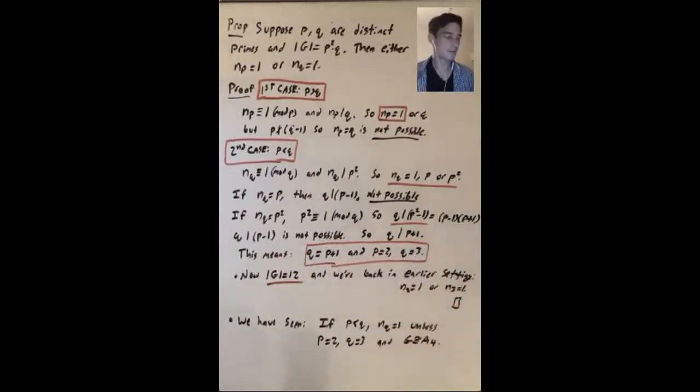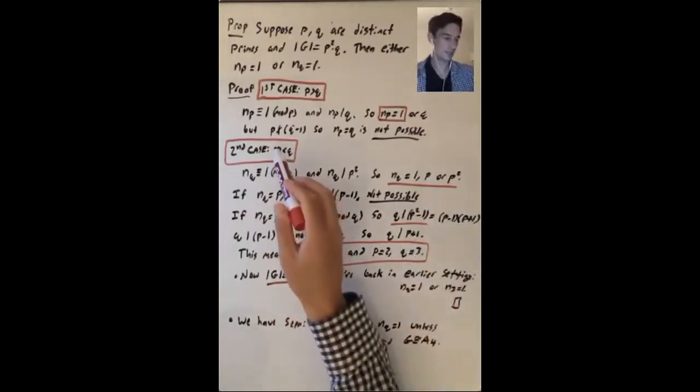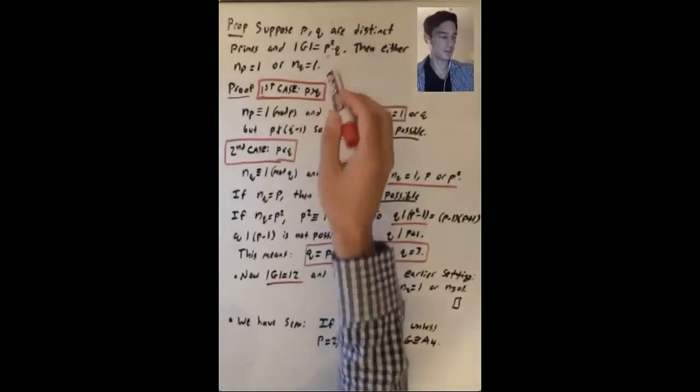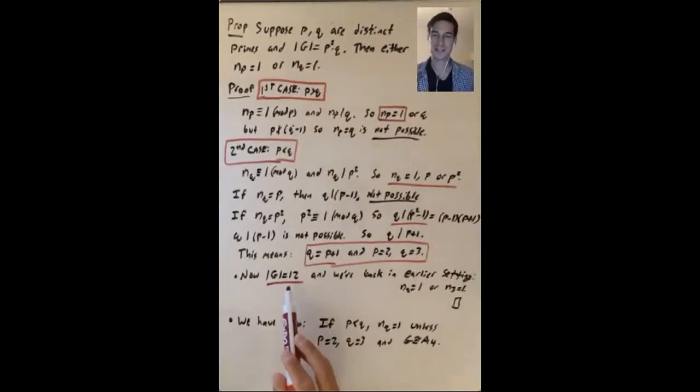But that can happen, right? That checks here. That's fine. But then g is a group of order 2 squared times 3, which is 12. So now g is a group of order 12.